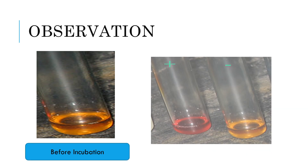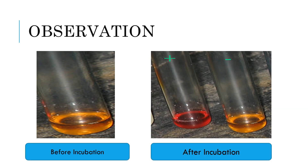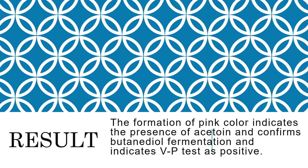Let's see the observation. This is the test tube before incubation, and these are the test tubes after incubation. The positive test tube indicates formation of acetoin and oxidation to diacetyl. This diacetyl reacts with the peptone and there is a change in color of the media. In the negative test tube, there is no formation of acetoin. The formation of pink color indicates the presence of acetoin and confirms butanidoyl fermentation, indicating VP test as positive.